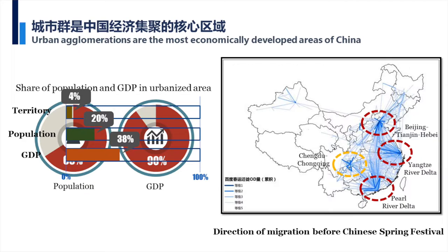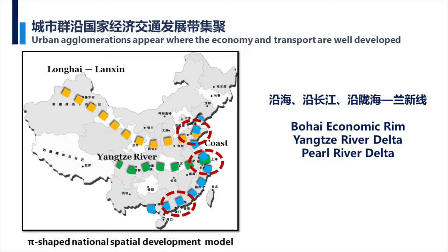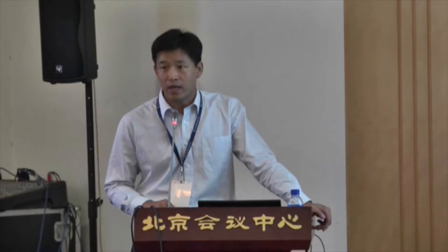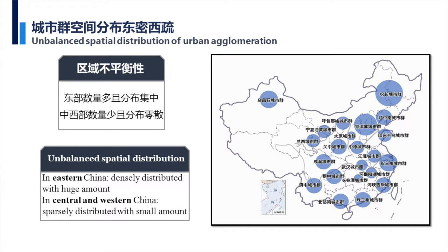For China's spatial pattern, you can see the coastal area and also the Longhai-Lanxin Railway and Yangtze River. These areas and lines are the major areas for the clusters. They are mainly located along these three axes. For the spatial development or spatial deployment, we have more in the east and less in the west. They are also more dispersed in the western part.